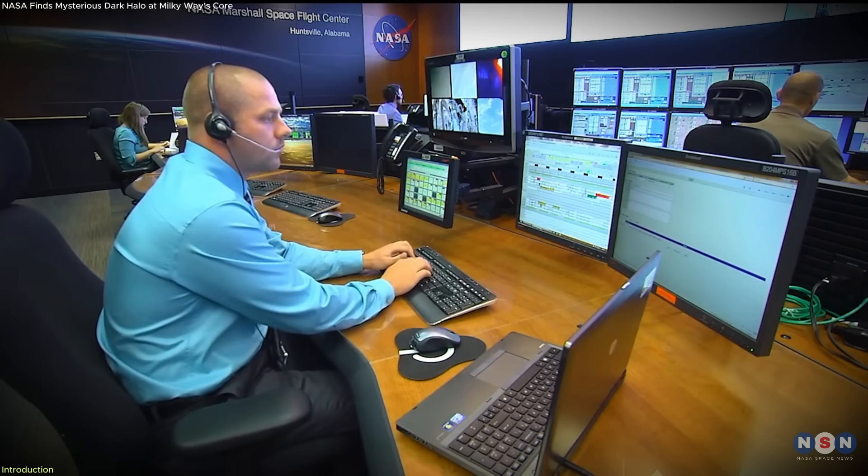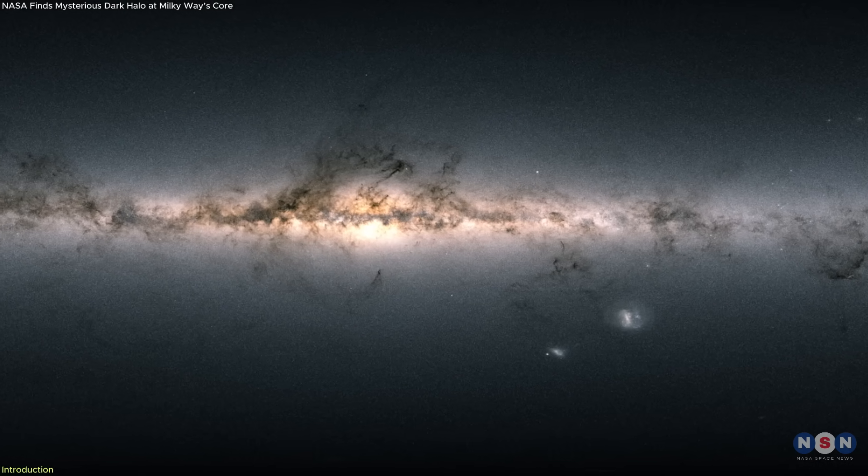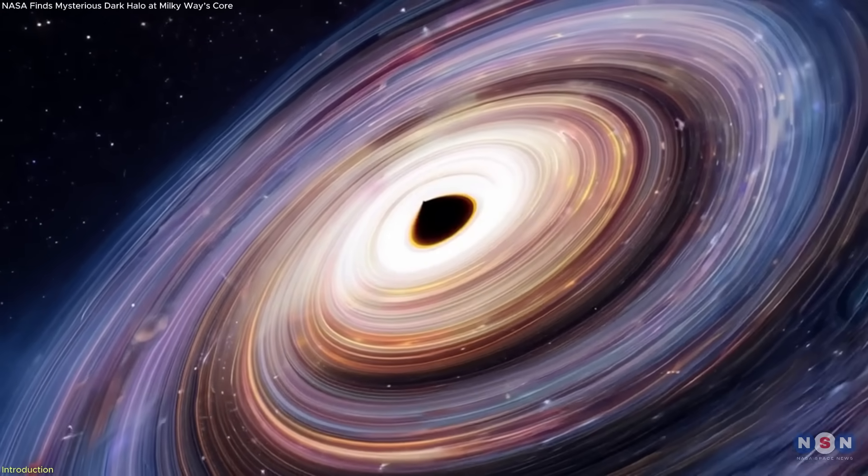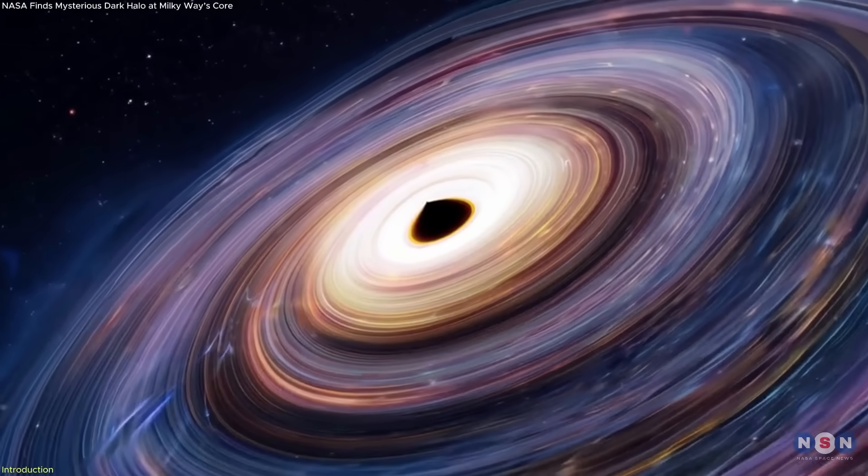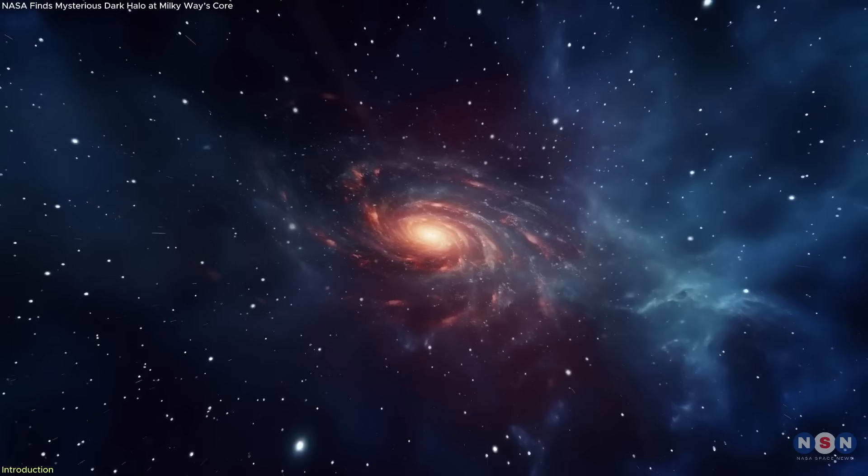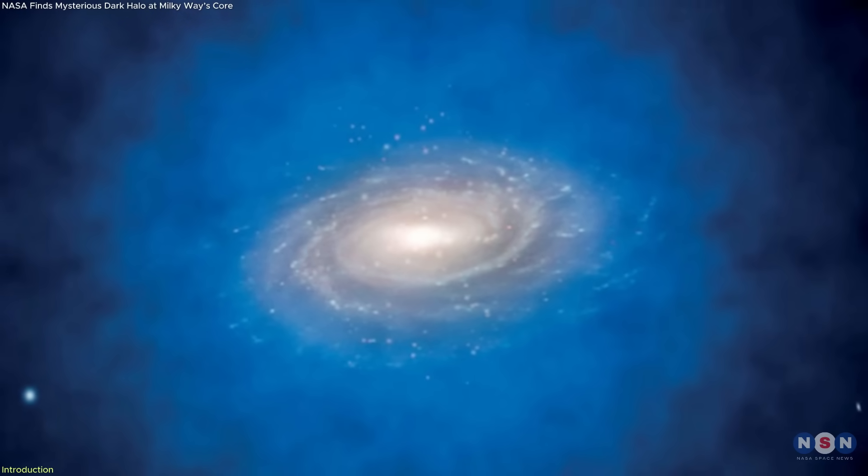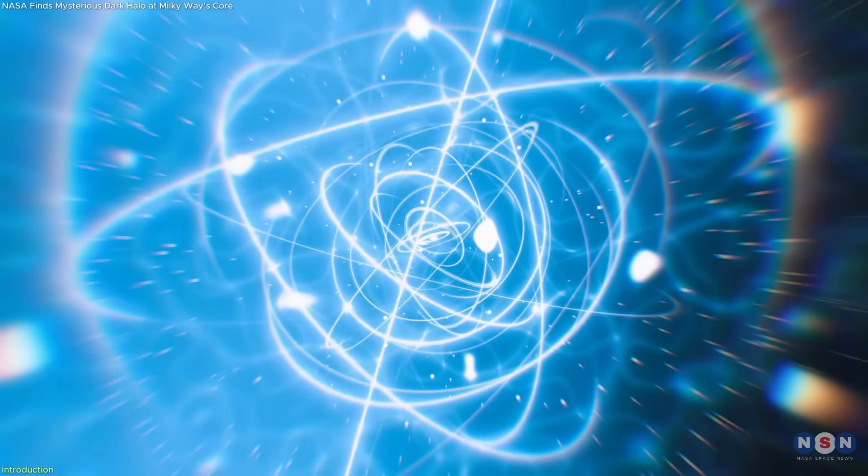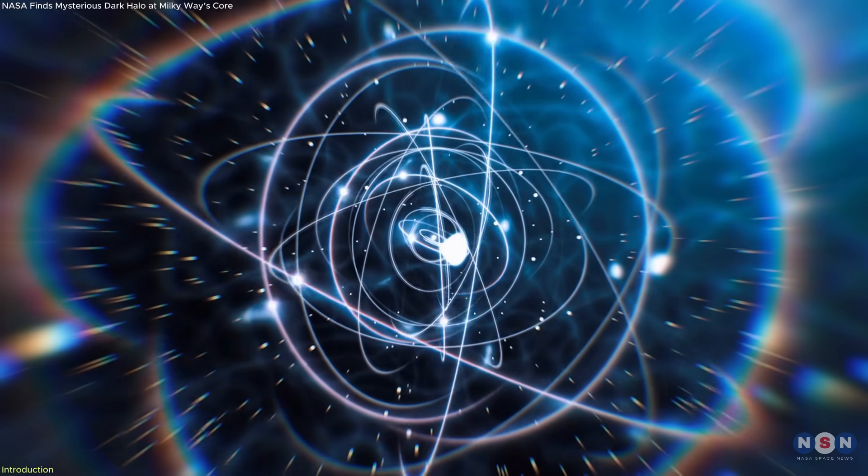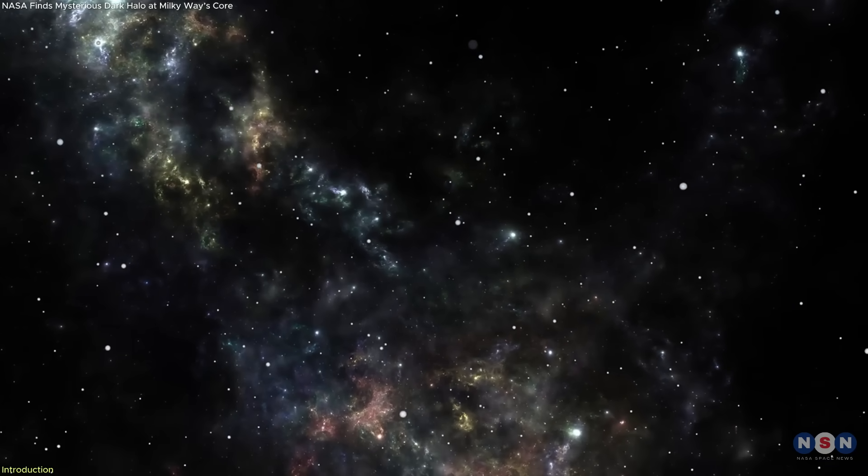NASA-backed scientists have just uncovered a mysterious dark halo right at the center of the Milky Way, a region already dominated by a supermassive black hole. But this isn't another black hole discovery. It's something far stranger, a halo of energy that doesn't glow, a force powerful enough to strip hydrogen atoms of their electrons without any known source to explain it.